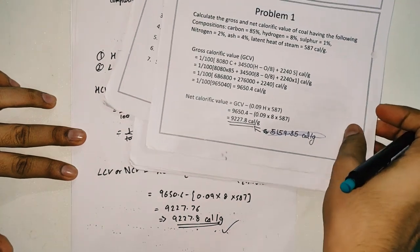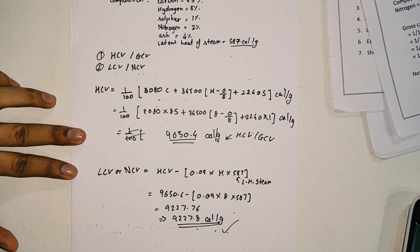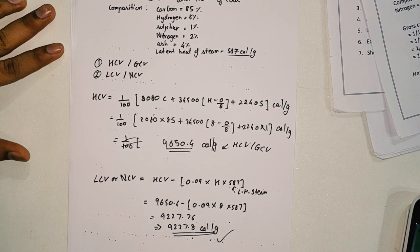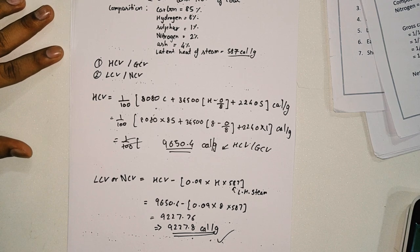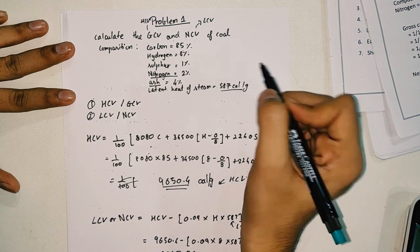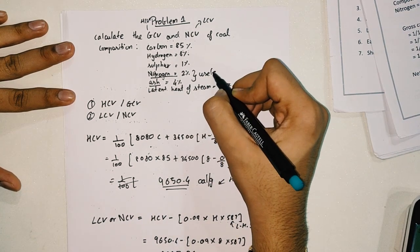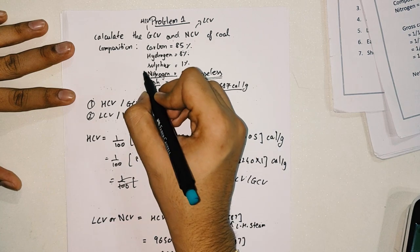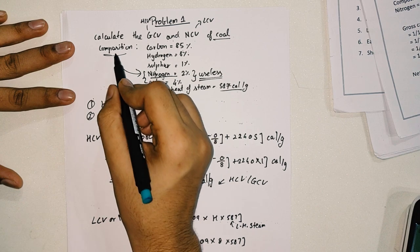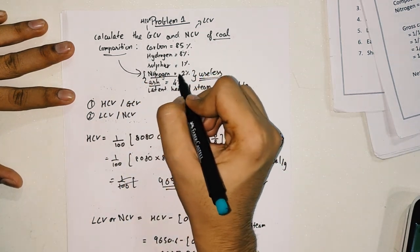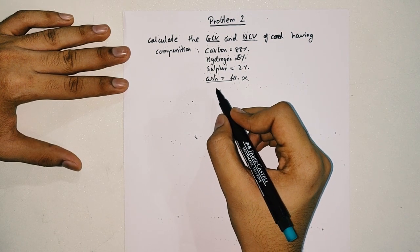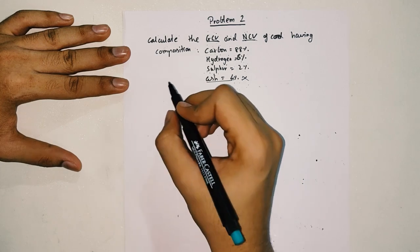A common question is why nitrogen and ash are given but not used. These values are additional information representing the composition of coal, but they are not needed to find HCV or LCV, so they can be ignored.